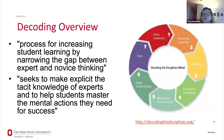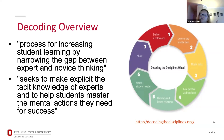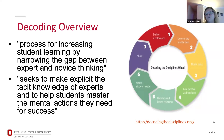This is a model developed by Joan Middendorf and David Pace — Decoding the Disciplines. It's a seven-step model, a kind of seven-step wheel, that gives instructors, librarians, and folks who work with students a way of thinking about the expert knowledge they have and how they can help students cross that gap. The goal is to make explicit what we know that has become tacit, so that students are able to master the tasks we give them.